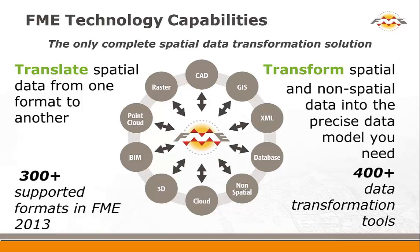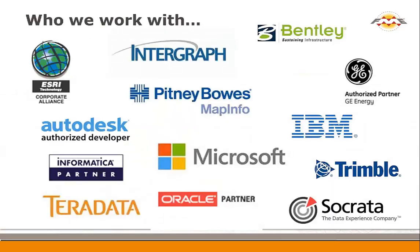We added raster data, point cloud or LiDAR information, 3D and related BIM building information management datasets, and more recently cloud data formats which come in a wide variety. Amazon Web Services has a database called Redshift that we're adding. Google has a few formats in the cloud — Google Spreadsheets is one that we can read and write — and of course non-spatial data like flat files, CSV, even text files, some XML, and non-spatial databases like SQL Server or Oracle.